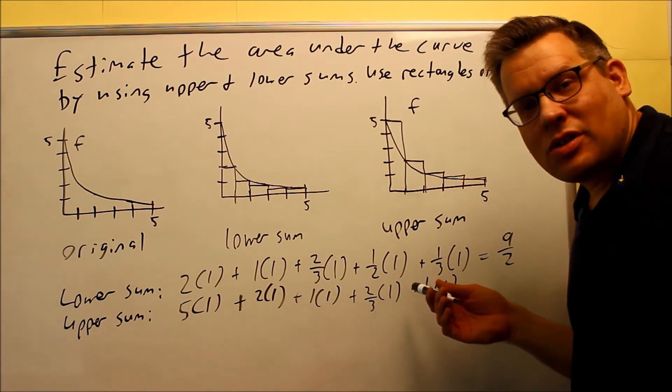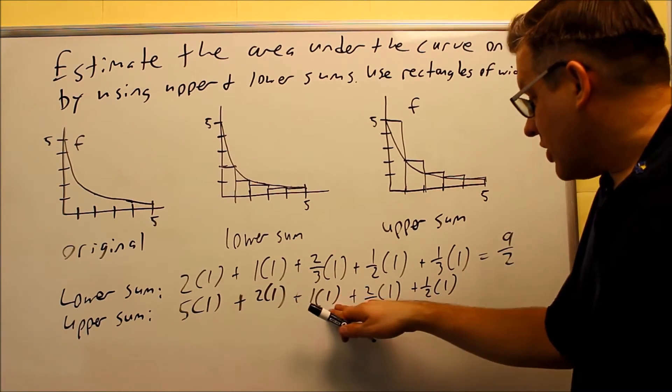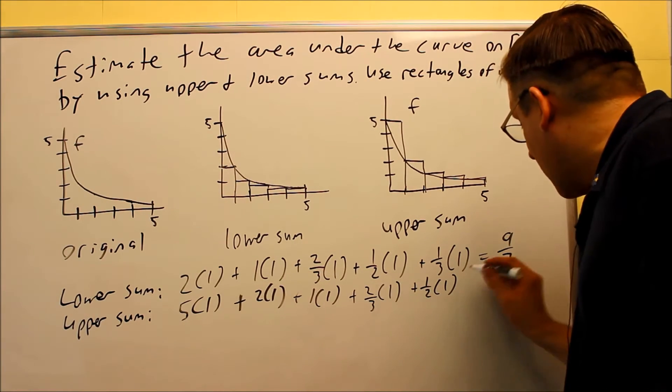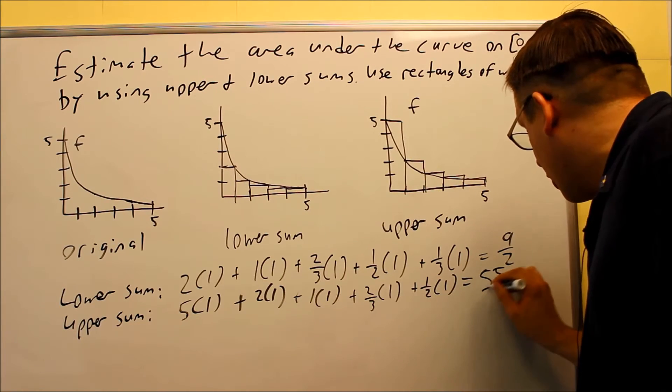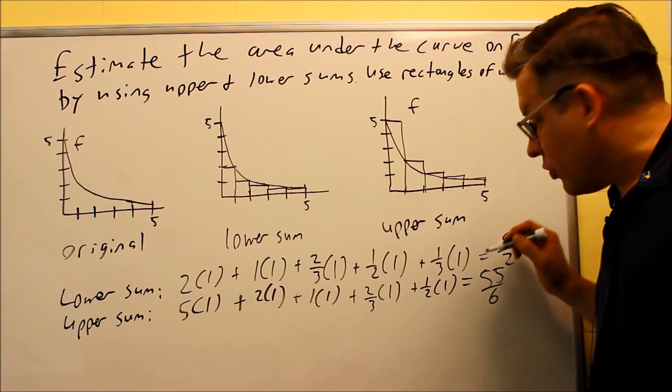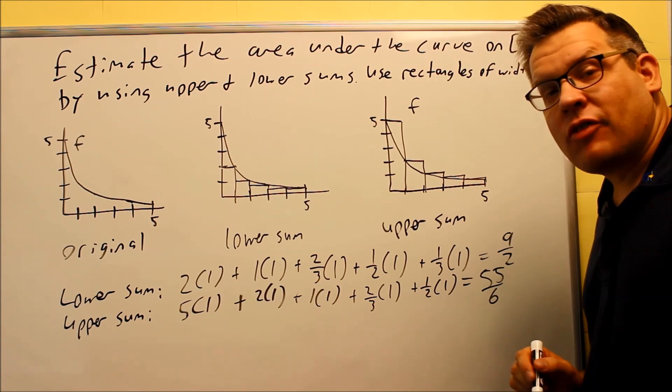Now we're going to add all this together. So 5 plus 2 plus 1, that's 8, 8 plus 2/3 plus 1/2. If you add all that together, you should get 55/6. So now we know that our true area is going to have to be between 9/2 and 55/6.